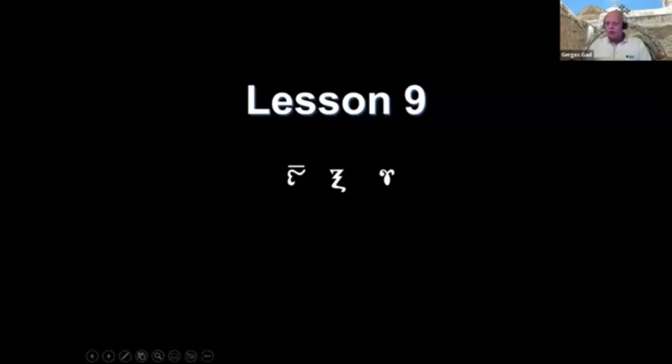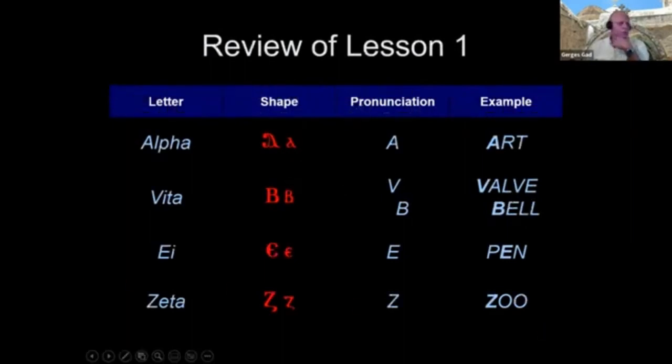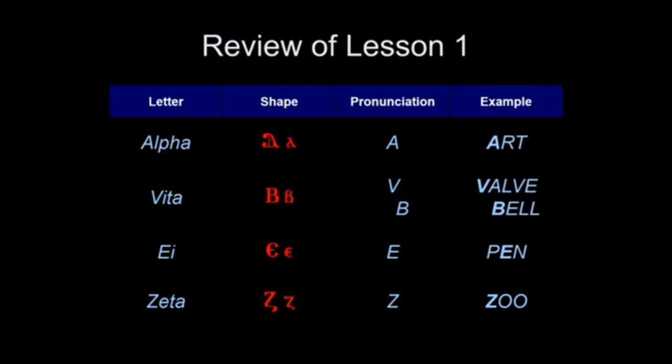Let's continue with our Coptic lesson. We're up to lesson nine and we're almost finished with the Coptic letters. We only have these three letters, and then we have two more letters next week, and then we would have learned all of the Coptic letters. So let's get some volunteers to review the Coptic letters. Andrew — actually it's Thomas, that's my brother's name showing. Okay Thomas, go ahead.